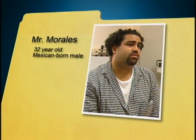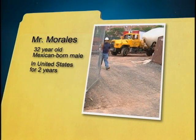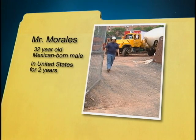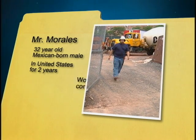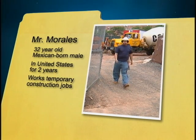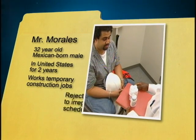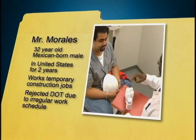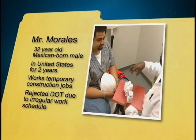The second case is Mr. Morales, a 32-year-old Mexican-born man in the United States for two years. He lives with his wife, two children, and his brother, and works temporary day jobs in construction. He says he can't be on DOT because of his irregular work schedule.